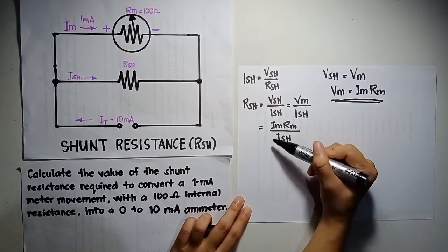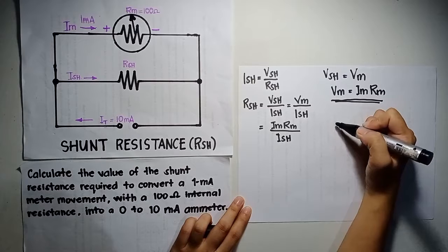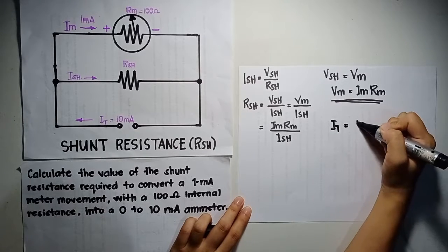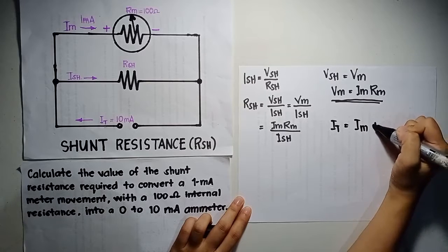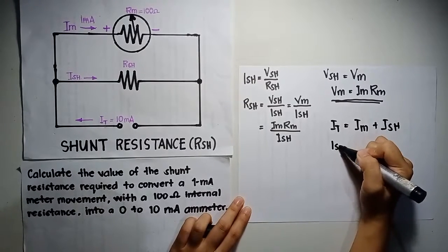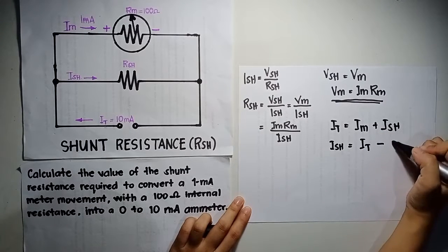But still, we don't have the value of Ish. To find Ish, we can see that It is the summation of Im plus Ish. So, Ish is equal to It minus Im.